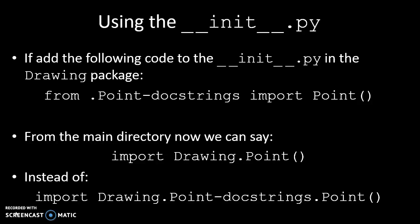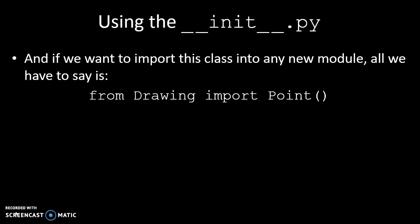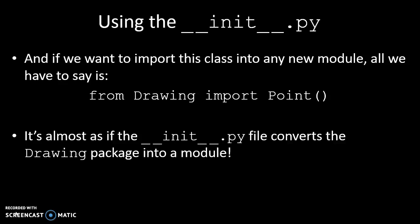Which is great, it saves us a lot of hassle, and really what it's saying is we can simply say from Drawing import Point and it knows it's there. So in essence what the __init__.py file is is converting the Drawing package into a module. So it's changing the folder into a file because the folder now knows where to find classes within itself.